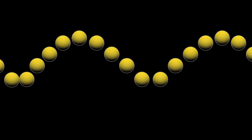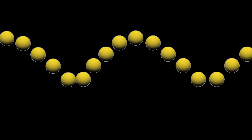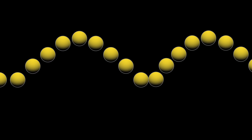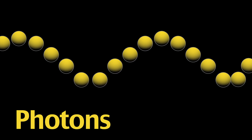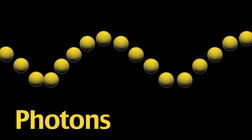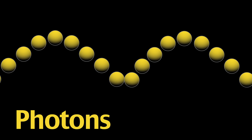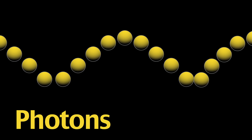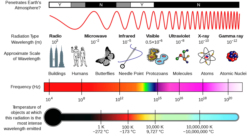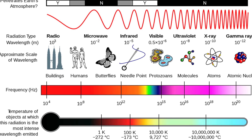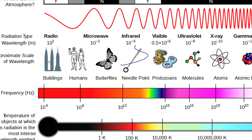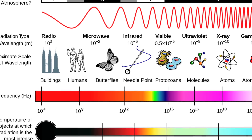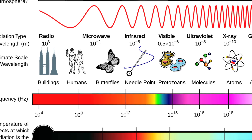We'll begin by explaining what creates the electromagnetic spectrum. Electromagnetic radiation is made up of tiny particles of energy called photons. These photons travel at the speed of light in wave-like patterns. The electromagnetic spectrum is the range of all electromagnetic radiation waves.